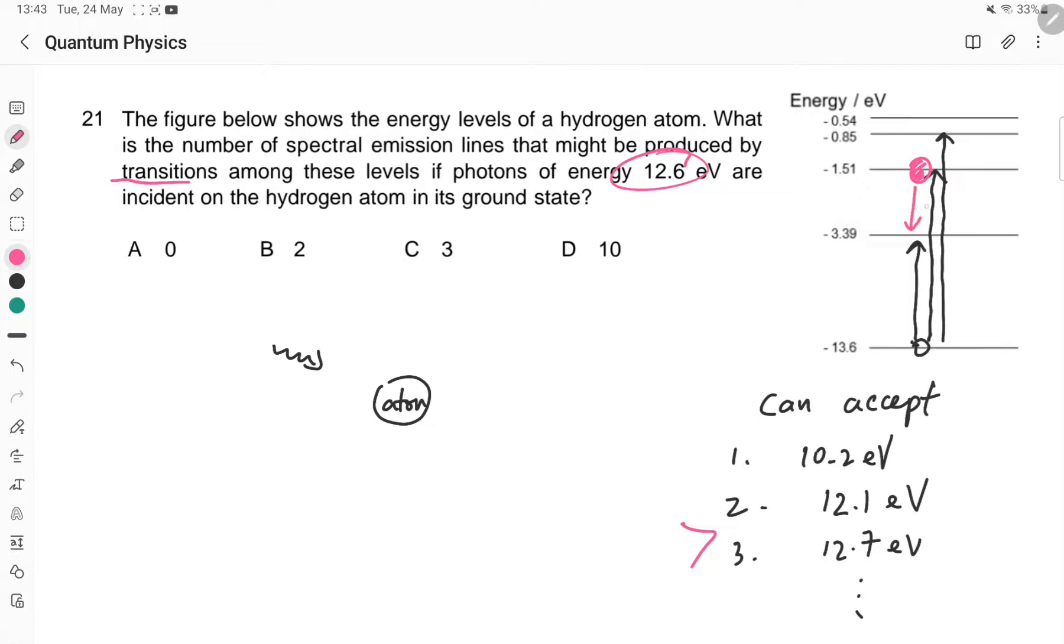Well, it could be 3 to 2, it could be 2 to 1, it could be 3 to 1, so there are three transitions. So they will choose C, except that's the wrong answer because this mechanism is with a photon.